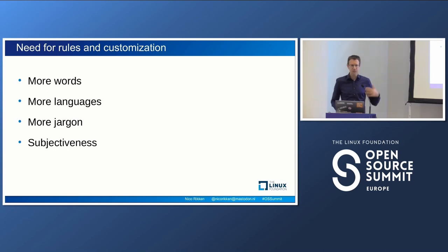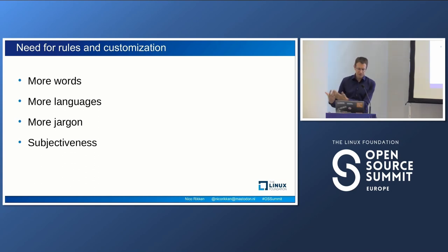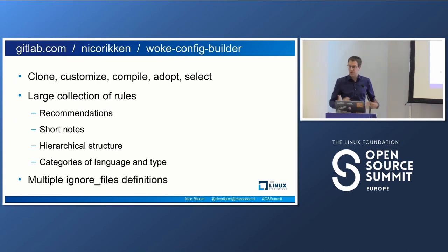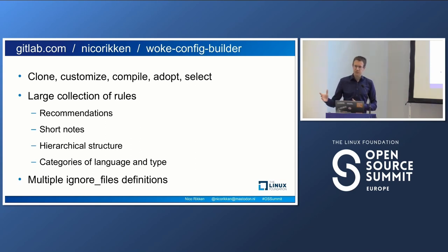Looking to implement this, I saw the need to expand on the quite limited rule set built into woke. I wanted to add more words, languages like Dutch, and jargon — I work in the energy sector and we have specific words that are far too complicated to include in documentation. A lot of this is also subjective, so it needs to be configurable. That brought me to build what I named the woke config builder.